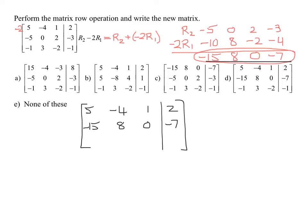And lastly, my original row 3: negative 1, 3, negative 2 and negative 1. So notice the only row that changed was row 2.